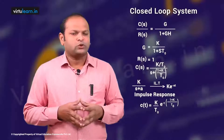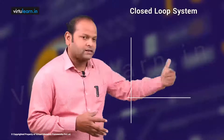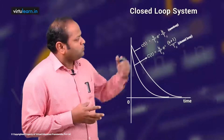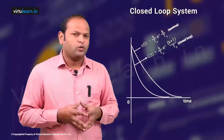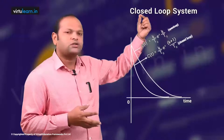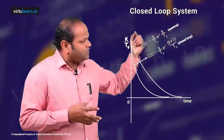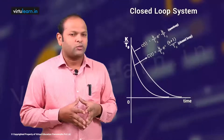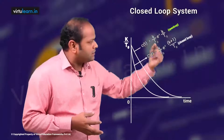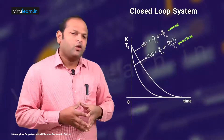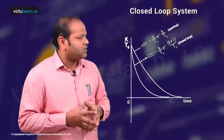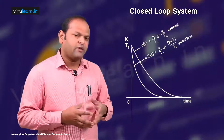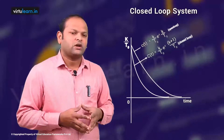Looking at the plot of impulse responses: the open loop response decreases slowly to zero, whereas the closed loop response reaches zero in much less time. From these two graphs I can say the closed loop system, which is the feedback system, is always faster than the non-feedback open loop system in reaching the steady state value.